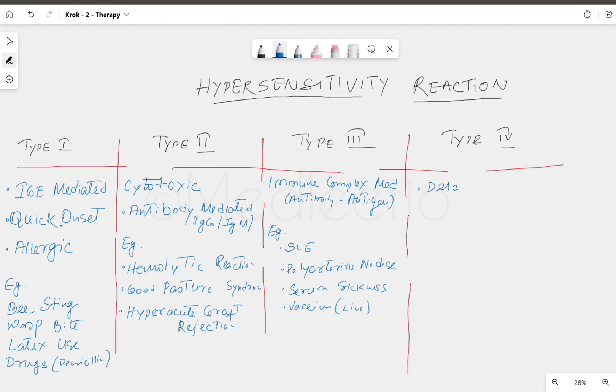The fourth one is delayed-type or cell-mediated. Examples: chronic graft rejection (so Type 4 is chronic graft rejection, Type 2 is hyperacute—see the differences), chronic latex use (acute latex allergic reaction is Type 1, chronic is Type 4), nickel or nickel-type material use, poison ivy—all cell-mediated.